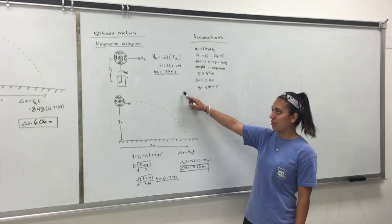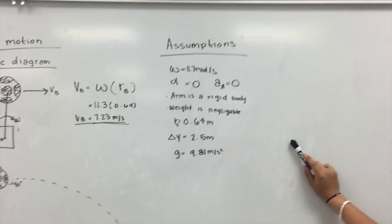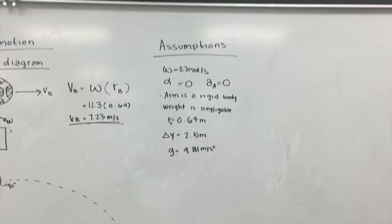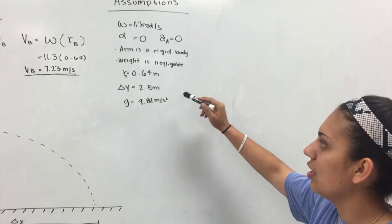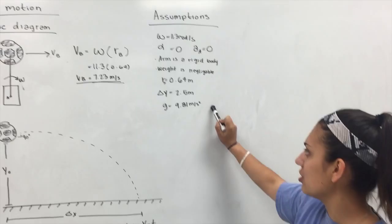First calculations we'll show is how far the ball will travel without the body moving. The assumptions that can be made is that omega equals 11.3 radians per second. The arm is a rigid body and all weight is negligible for this. Measurement R, which is the length of the arm, is 0.64 meters, delta Y is 1.25 meters, and G is acceleration due to gravity, which is 9.81.